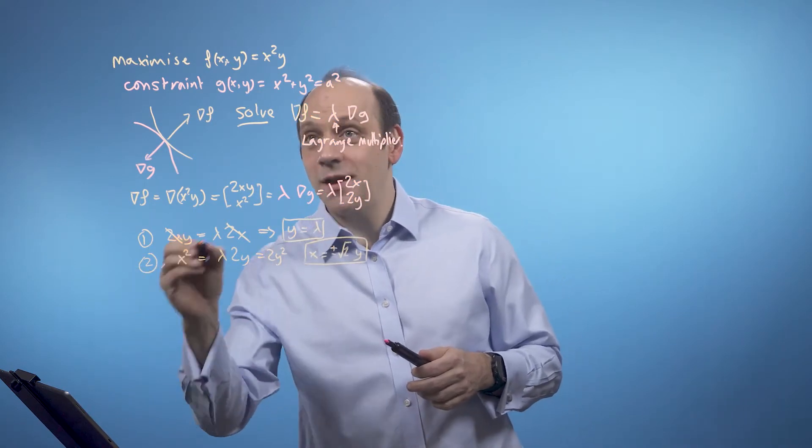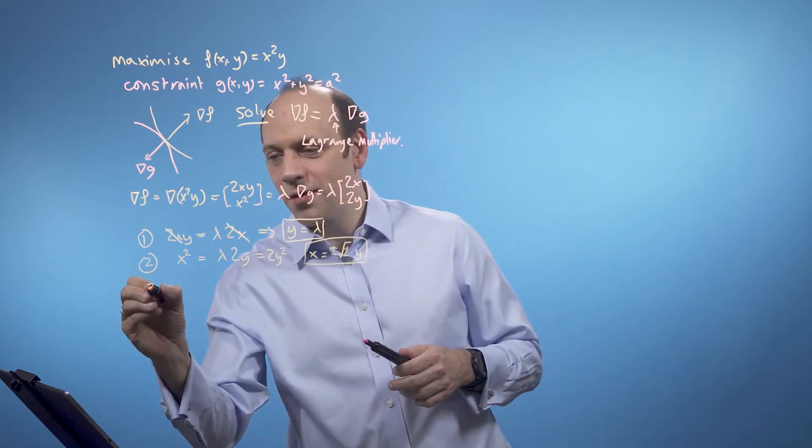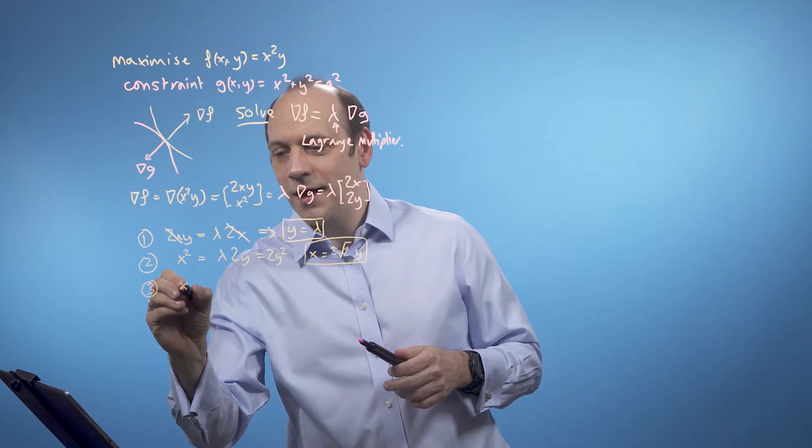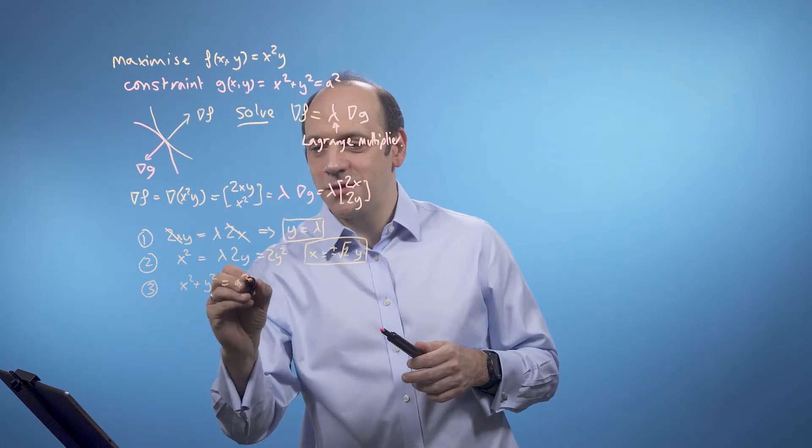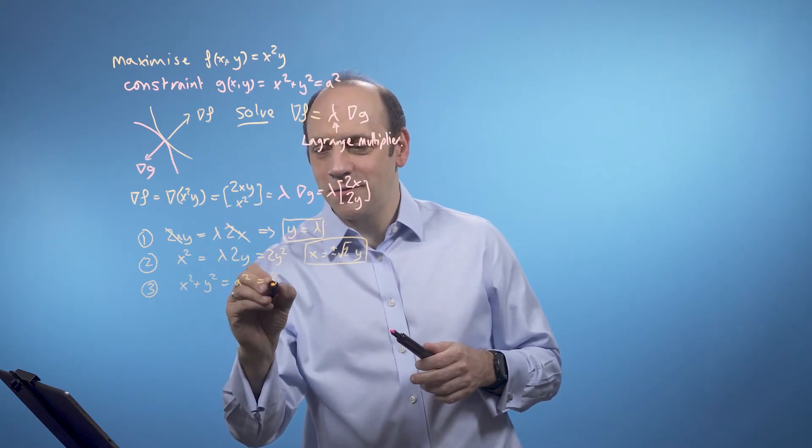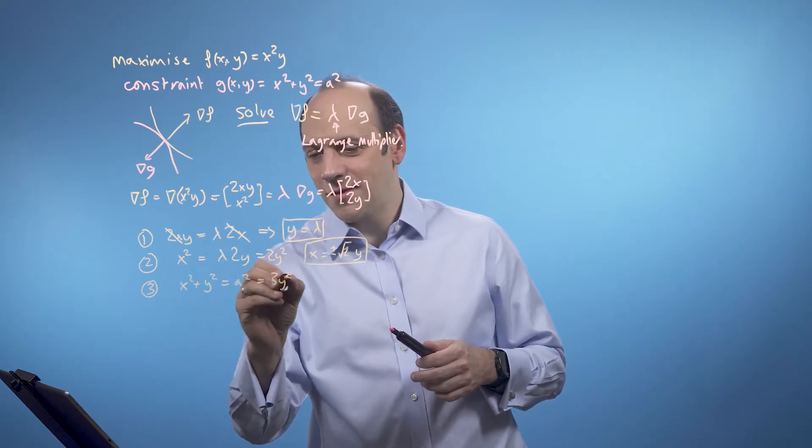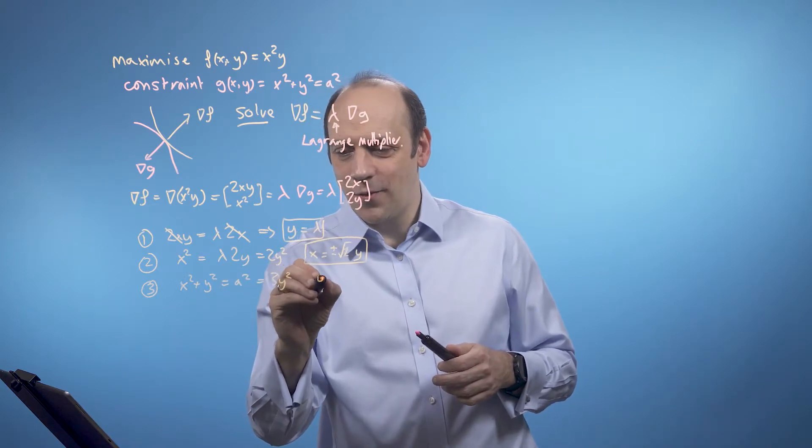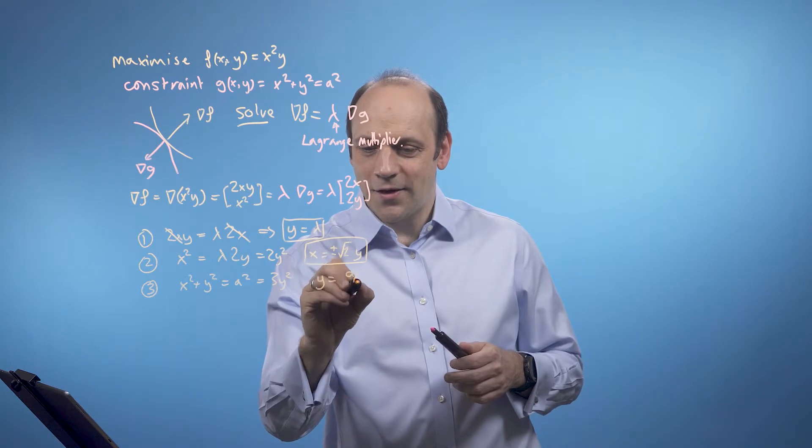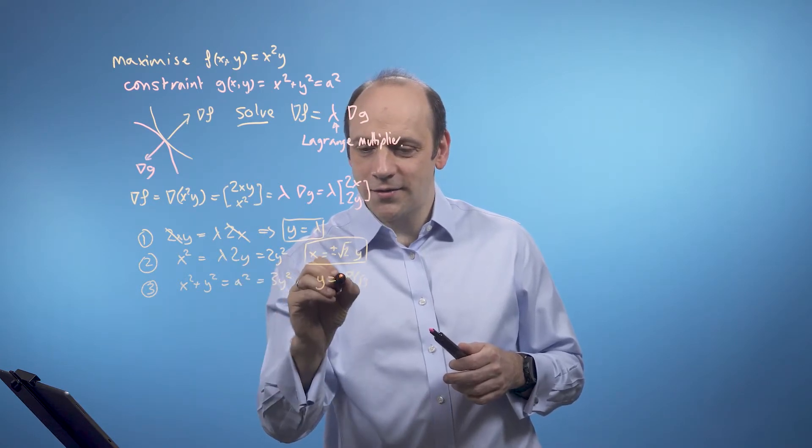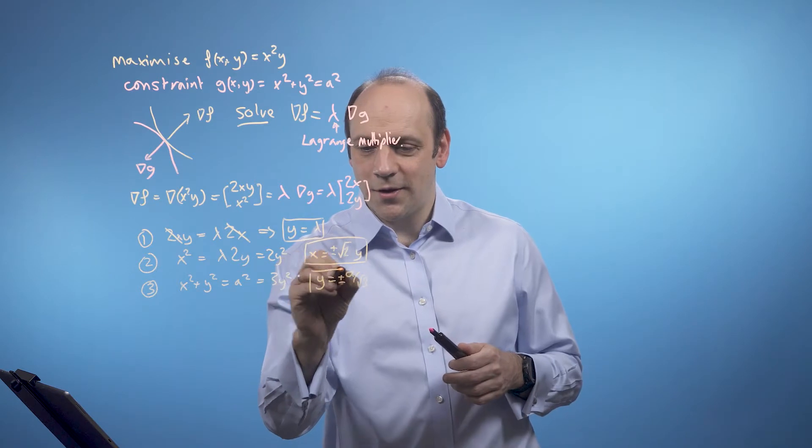And now if I take the constraint equation itself, the third one, I've got x squared plus y squared is equal to a squared. But x squared is equal to 2y squared, so that's equal to 3y squared. So then if I square root that, I can say that y is equal to a divided by the square root of 3. And again, because I've done the square root, I've got a plus minus.